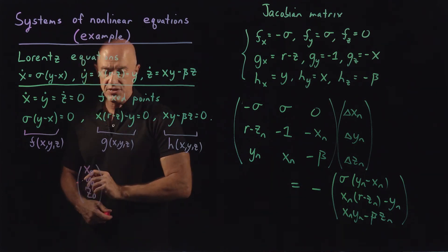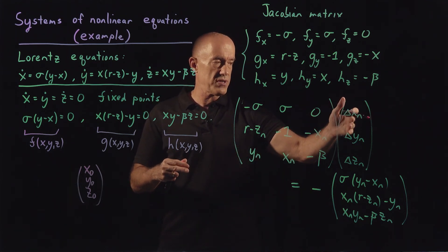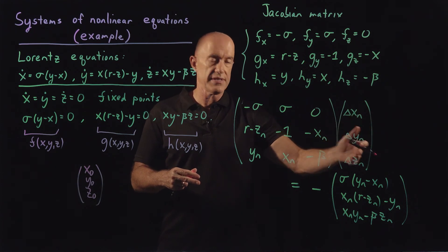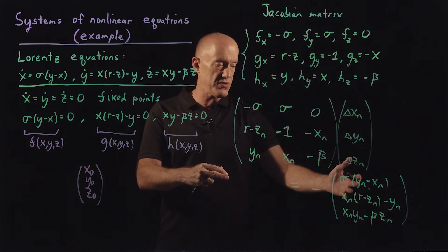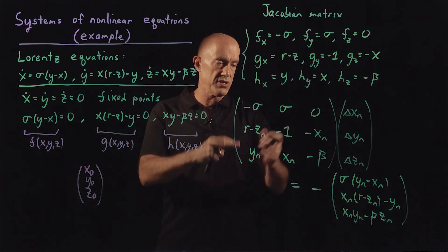And then you compute delta x_0, delta y_0, delta z_0 by solving this matrix equation by Gaussian elimination. It's basically inverting this matrix.